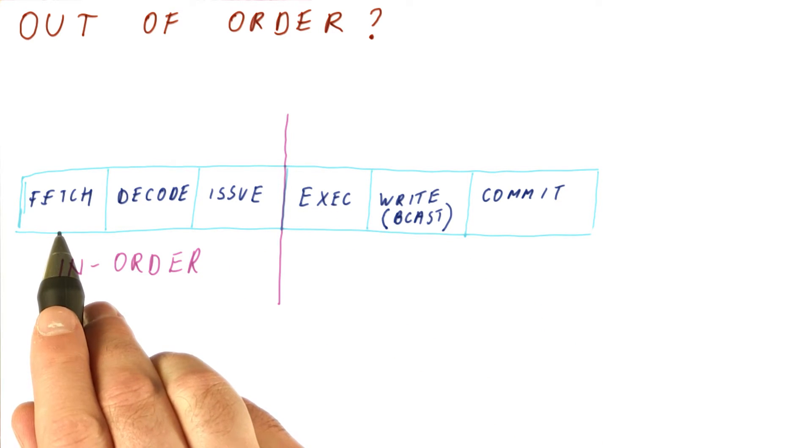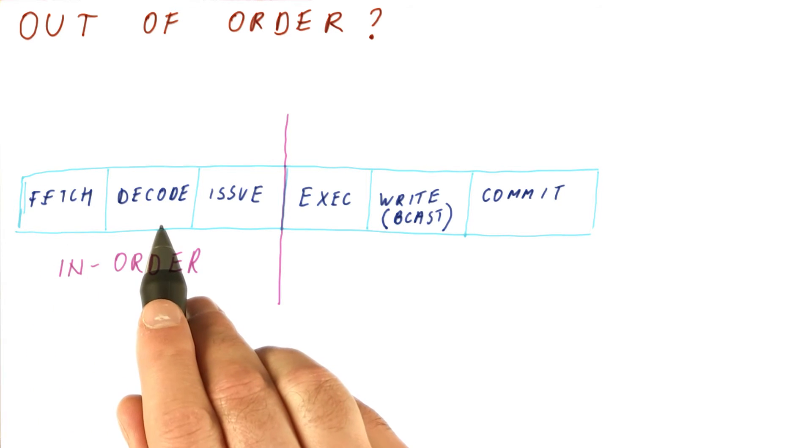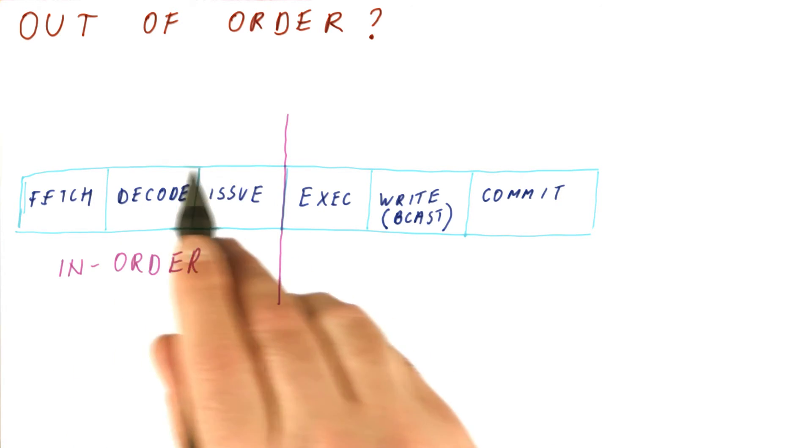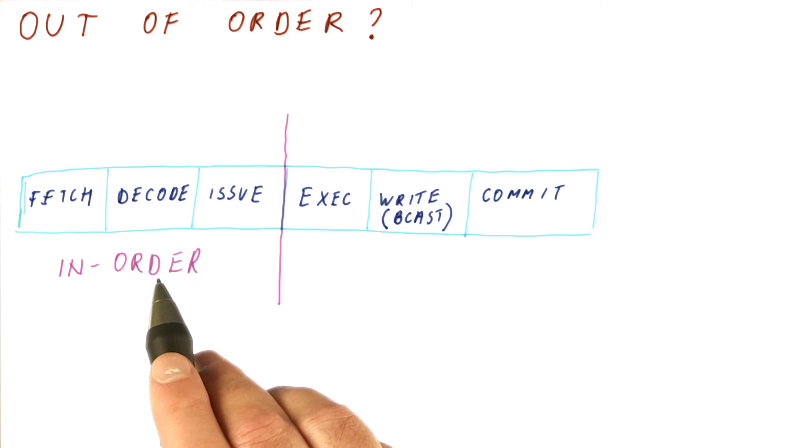We have to fetch them in the order that they should appear in the program. We then decode them in the correct order, and we issue them, if you remember, in order. This ensures that any dependencies we figure out here are the dependencies that are compatible with the original program order.